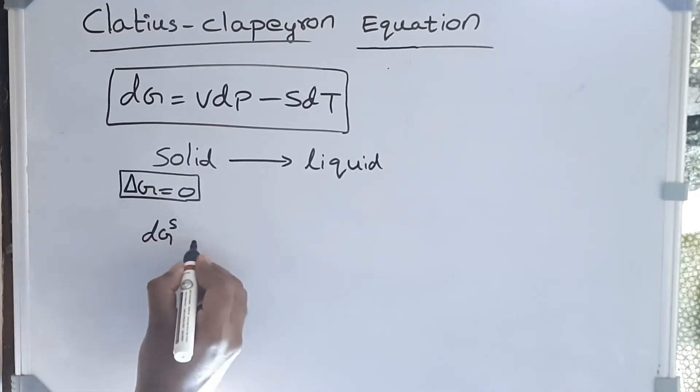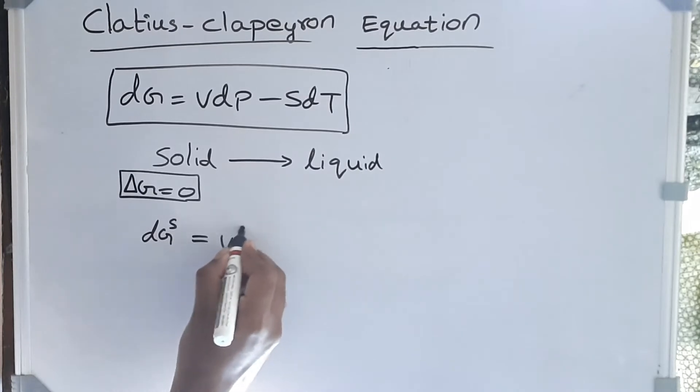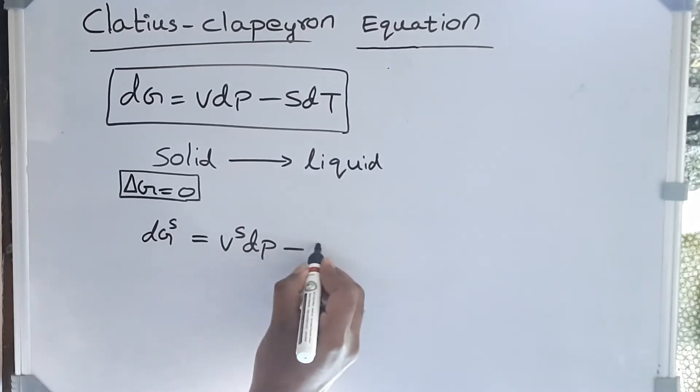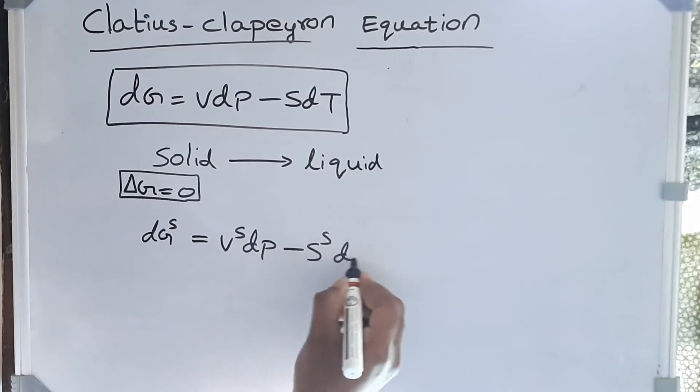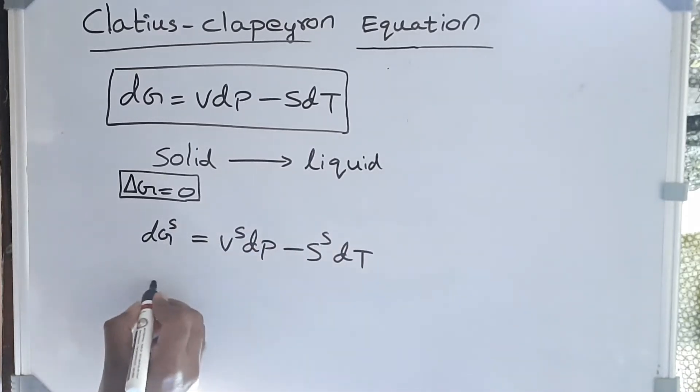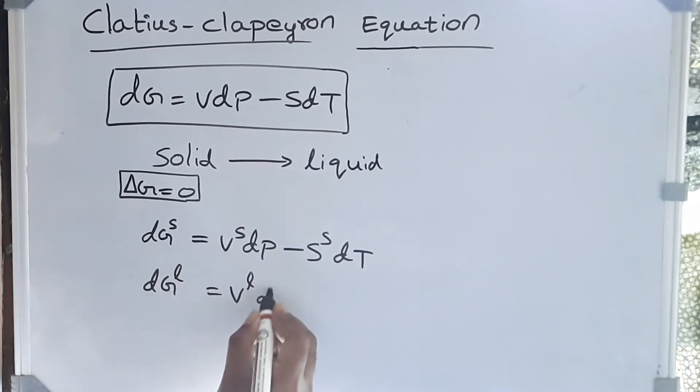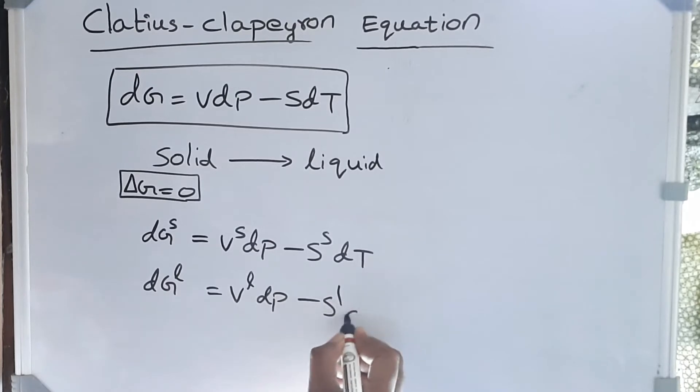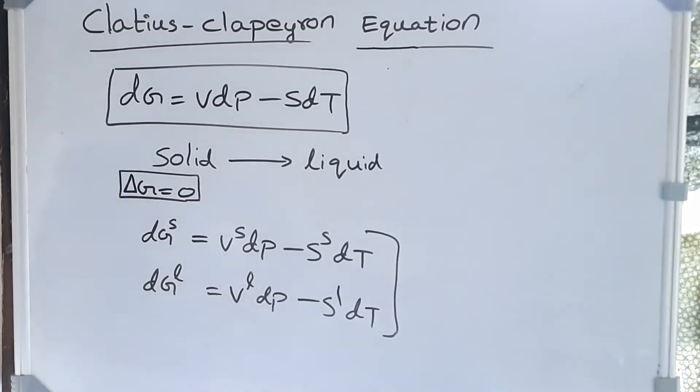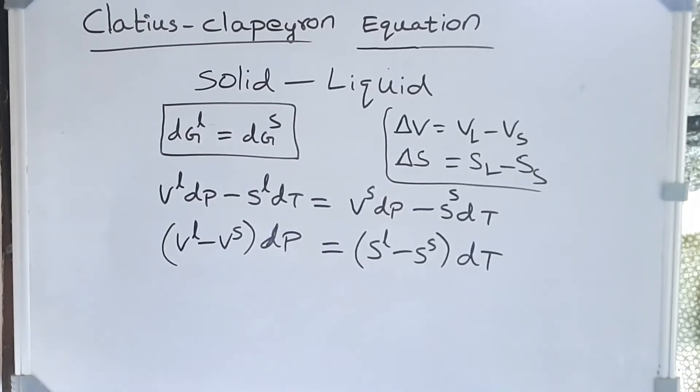dG solid = V_solid dP - S_solid dT. Similarly, dG liquid = V_liquid dP - S_liquid dT. Since we know the free energy of solid and liquid are equal, let's equate them.